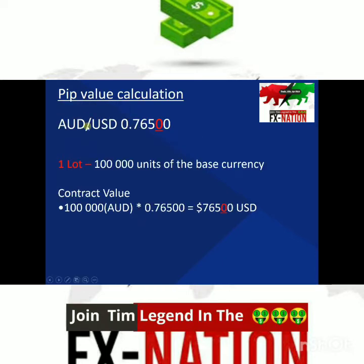If Aussie is trading against the US dollar at 76.50 and you want to trade one lot, which is 100,000 units of the base currency, what would be your contract value? Your exposure times the exchange rate would give you your contract value: 76,500.